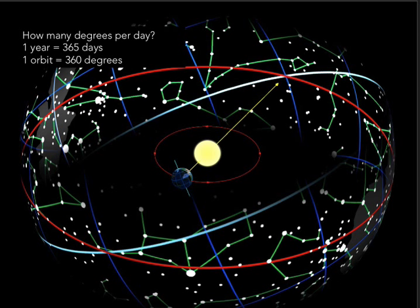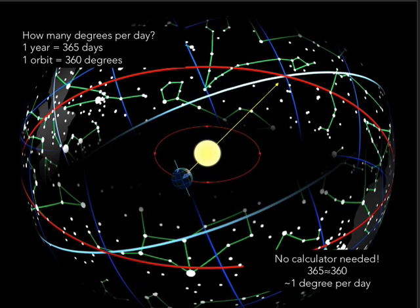So how much does the Sun move per day? In astronomy, we often do order-of-magnitude estimation. An astronomer will look at 365 and 360 and say those are really not very different. So a good approximation is that the Sun moves about one degree per day: if you divide 360 degrees by 365 days, those are approximately equal, giving you essentially 360 over 360, or one degree per day.